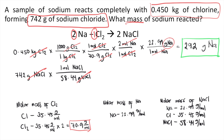The problem is asking for sodium, so we need to convert moles of NaCl to moles of Na using the balanced chemical reaction. According to the balanced reaction, for every 2 moles of NaCl there are 2 moles of Na. Putting in that ratio, the moles of NaCl cancel out and now you have moles of Na.